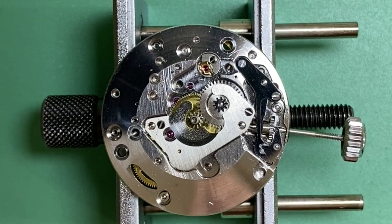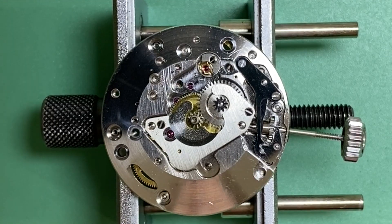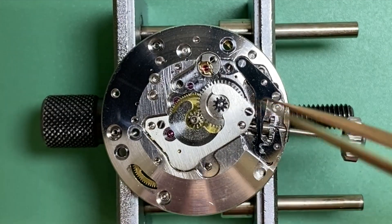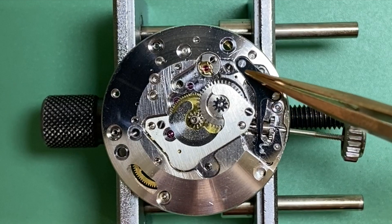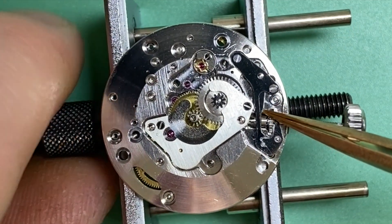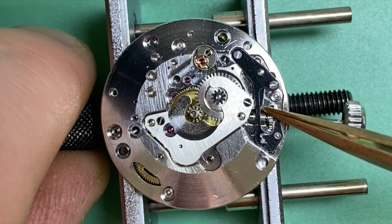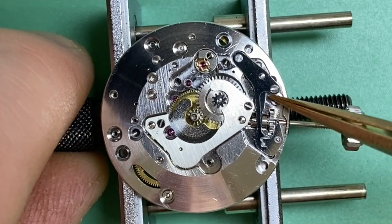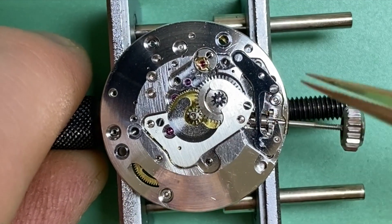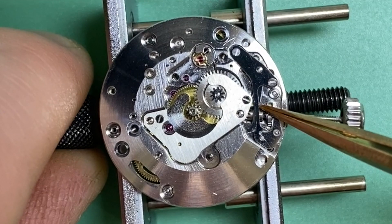First off we can talk about what a yoke or return bar is and what function it has in a watch. It's this piece hidden underneath here. We can see we're moving the sliding pinion or clutch pinion back and forth. The return bar or yoke does what it says, it returns the sliding pinion to the correct position.